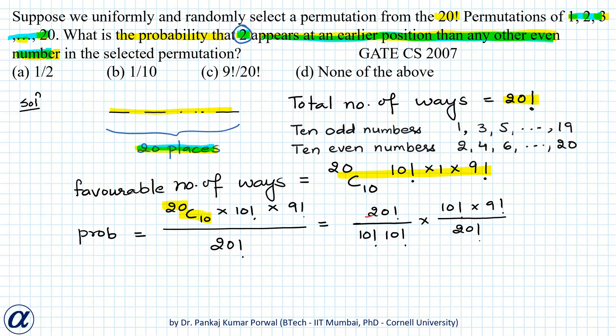Now here this 20 factorial will cancel 20 factorial this 10 factorial will cancel 10 factorial and 9 factorial will cancel 10 factorial leaving just 10. So this is equals to 1 by 10. So our option b is correct.